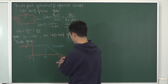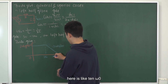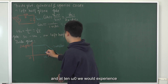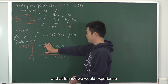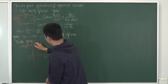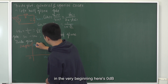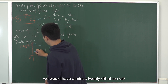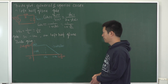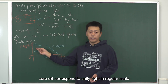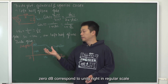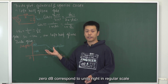For example, here at 10*omega_0, we would experience minus 20 dB. Suppose in the very beginning we have 0 dB — then we would have minus 20 dB at 10*omega_0. Note that 0 dB corresponds to unity gain in regular scale.